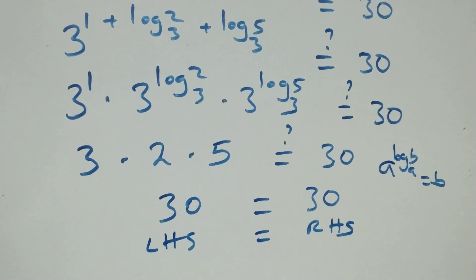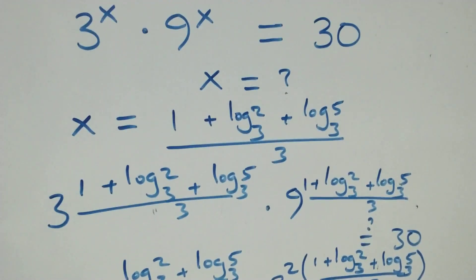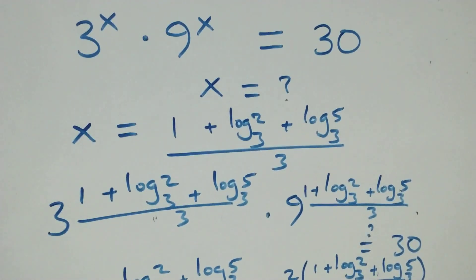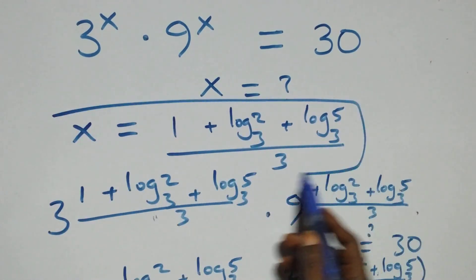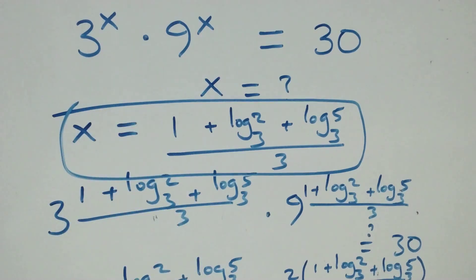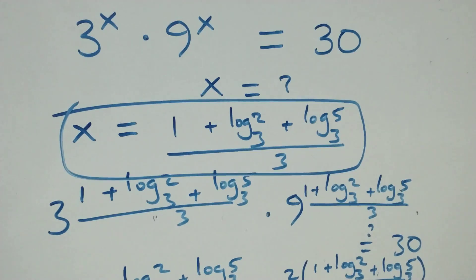Therefore, we conclude here that x equals 1 plus log 2 base 3 plus log 5 base 3, all over 3, satisfies this given problem. Thank you for watching — don't forget to subscribe for more videos and turn the notification button on. Share this video with thumbs up with your comments. See you next time, bye for now.